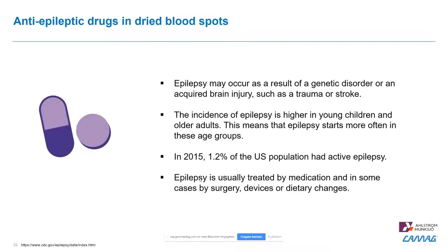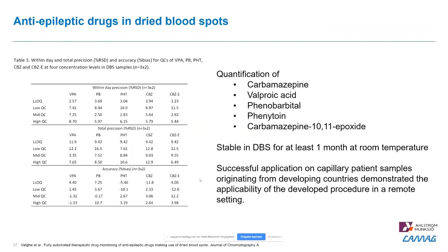This is a study done by our collaborating research group in Belgium, the laboratory from Christoph Stove. They took five different anti-epileptic drugs — one is a metabolite — and a DBS method was developed for this panel. The limits of detection and quantification were met and the method was then validated.